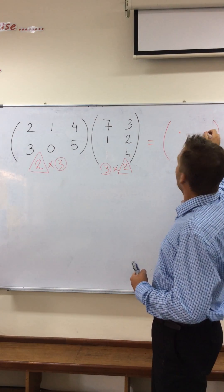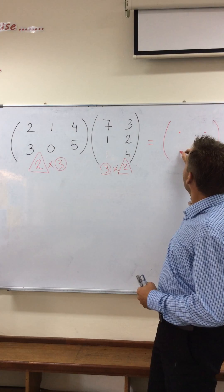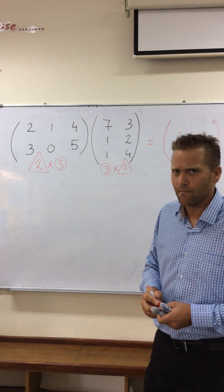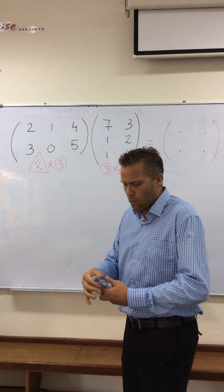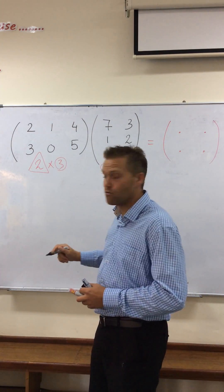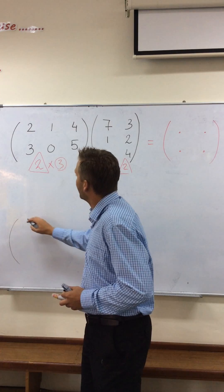So I'm going to put four dots, two by two, and I'm going to make sure that I'm going to get those four pieces of information. Now how do I work this out? I'm going to copy that first matrix, two by three. I'm going to copy that here.